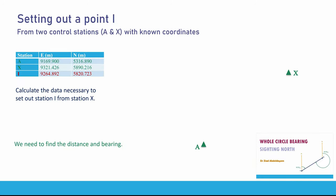Let's say that you have two control stations A and X. These are known stations, which means that you know their coordinates and you know their locations on the ground. The coordinates in our case are given in this table — we have station A and station X, with their easting and northing values. They might be marked by a road nail, for example.